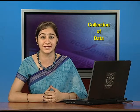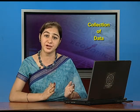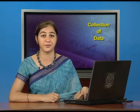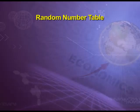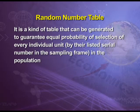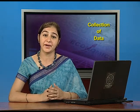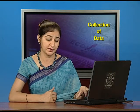This is also known as the lottery method — like in a lottery we are not sure who will win, similarly in this method we have no surety of anyone being selected. The same can also be done by using a random number table — it is a kind of table generated to guarantee equal probability of selection of each and every individual unit in the population. These random number tables are available in published form or can be generated using appropriate software packages.